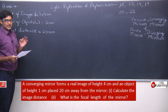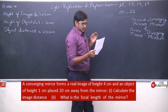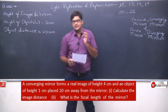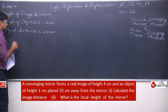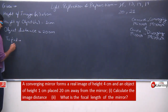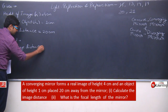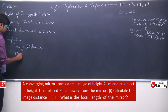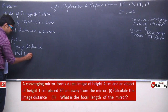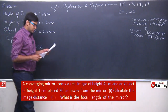Now we have written all the given data and understood it completely. What we need to find is the image distance and focal length. So let us write: To find — image distance and focal length.